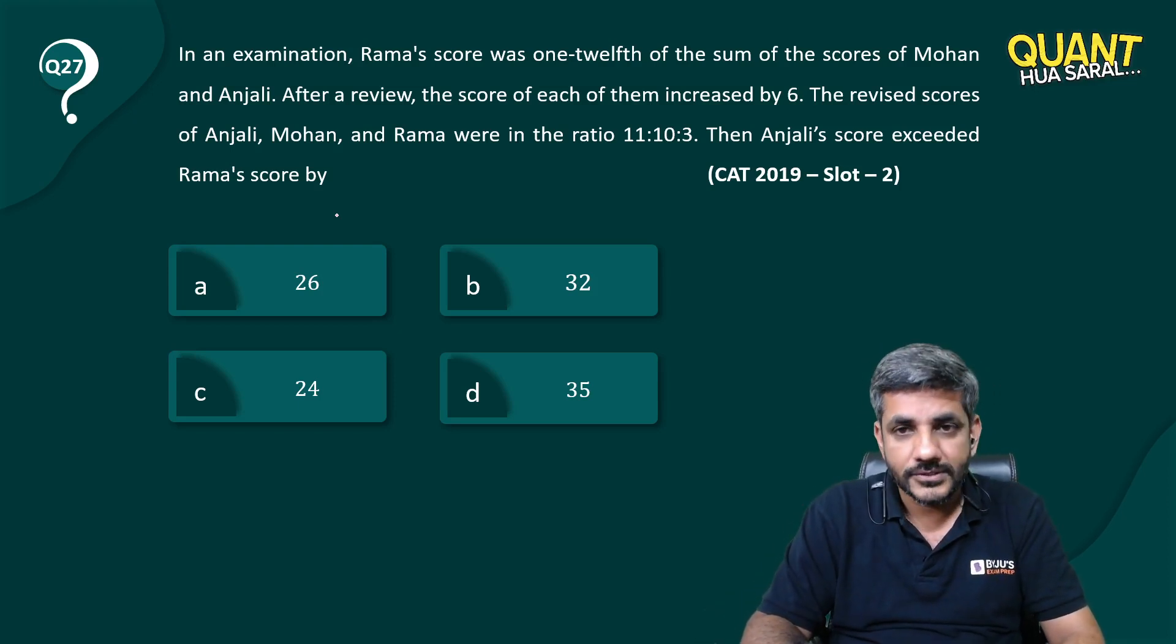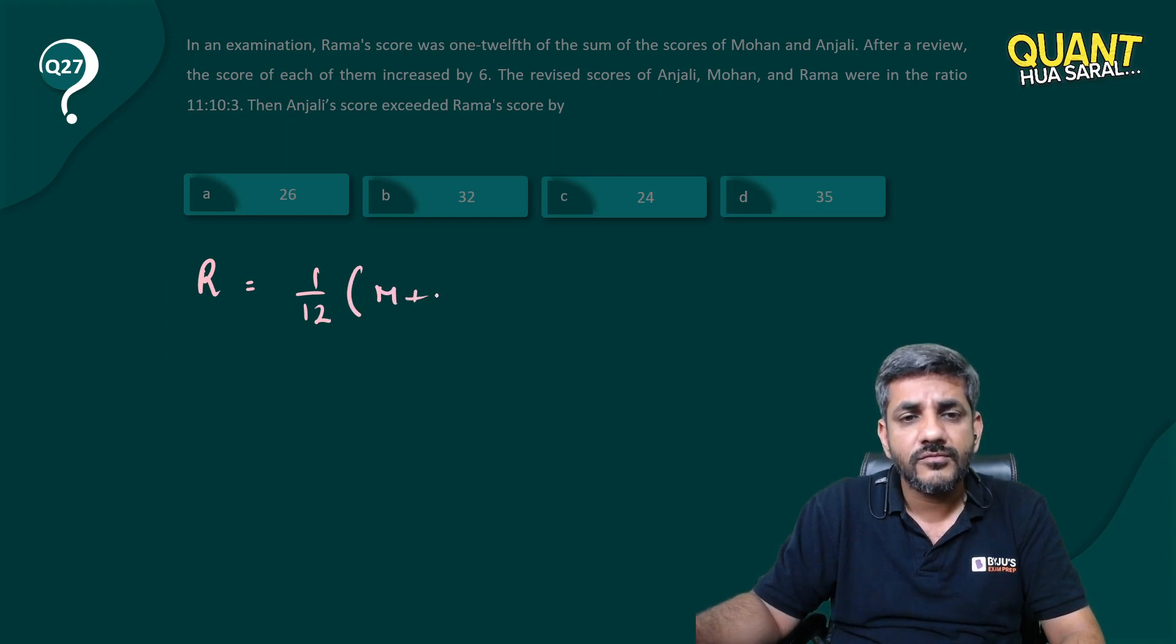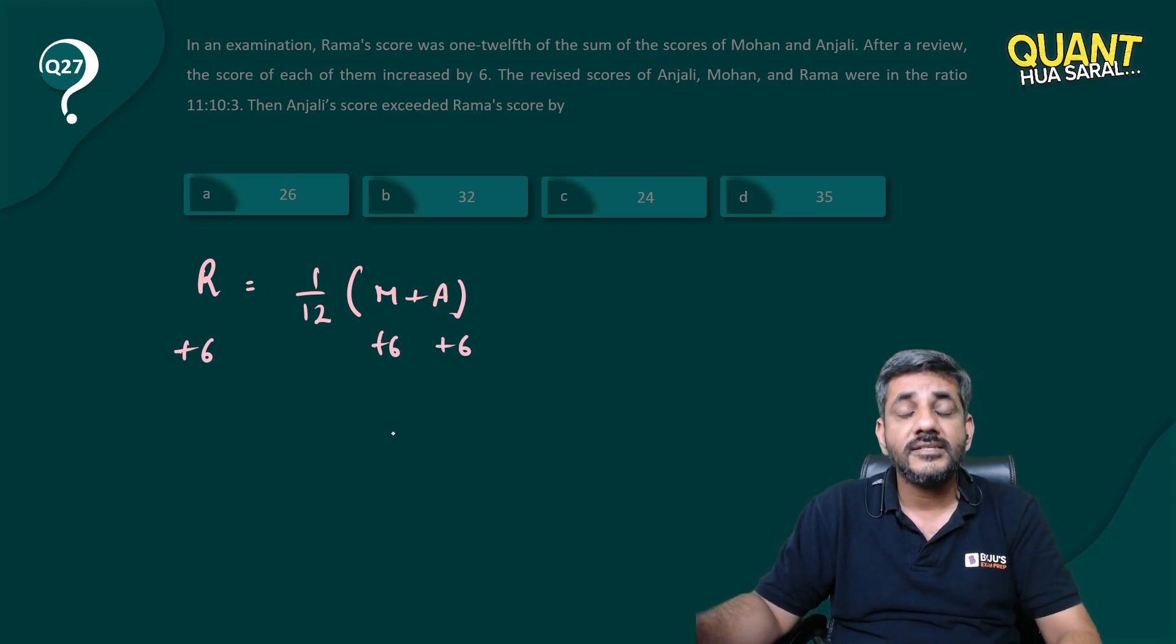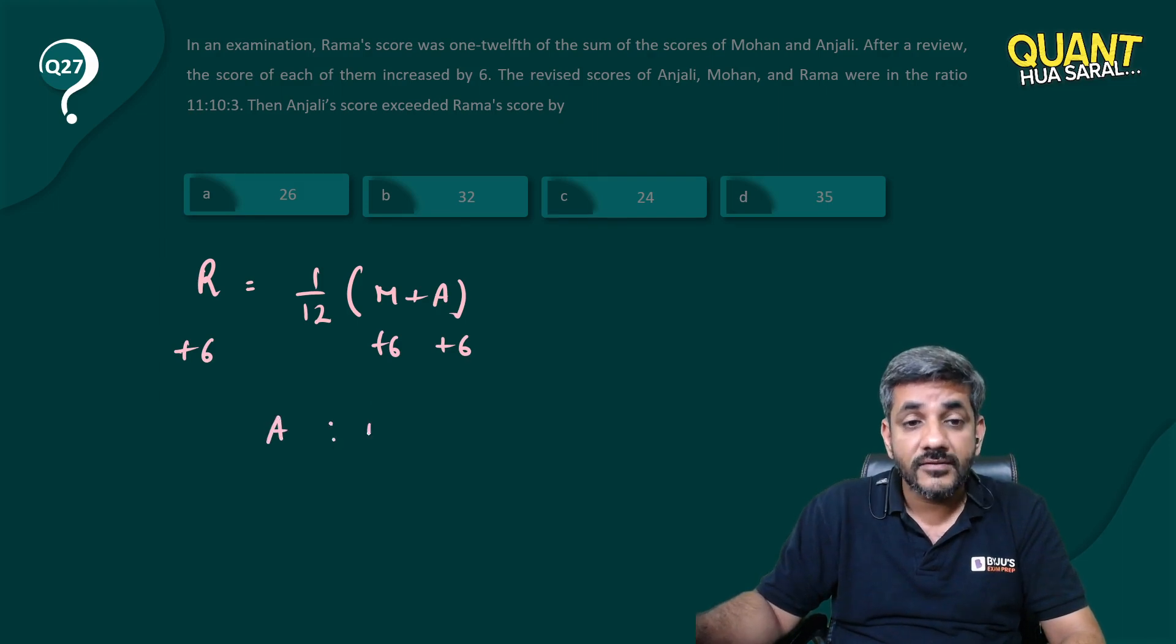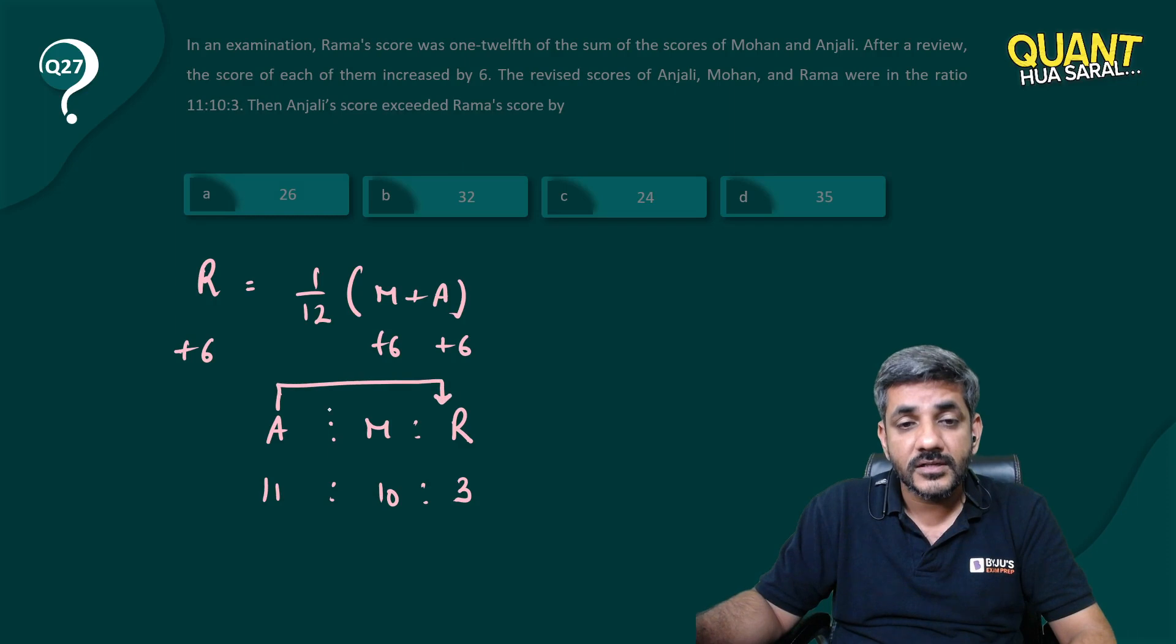Then Anjali's score exceeded Rama's score by how much? Let's have a look at this. So Rama's score was 1/12 times the sum of the scores of Mohan and Anjali. After a review, the score of each of them increased by 6. The revised scores are given as A is to M is to R - Anjali, Mohan, and Rama - in a ratio of 11:10:3. So Anjali's score exceeded Rama's score by how much?